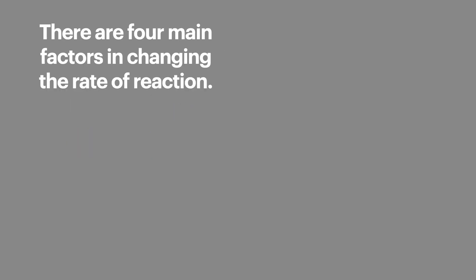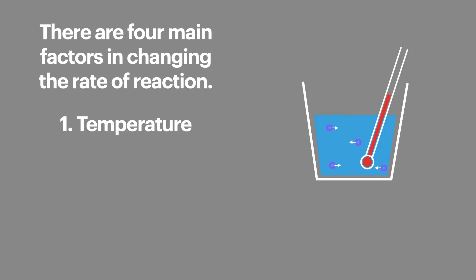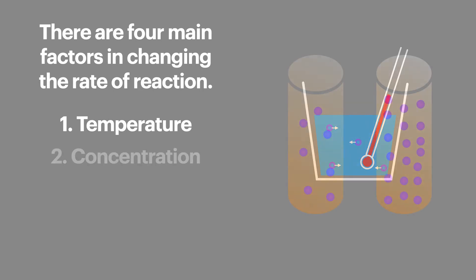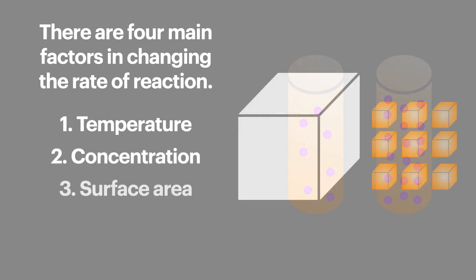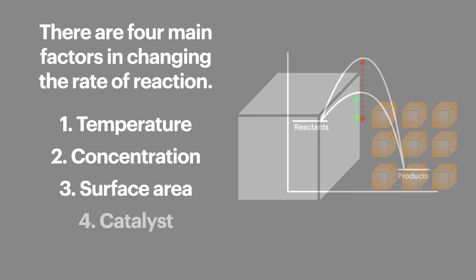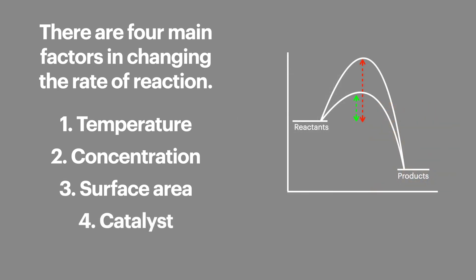There are four main factors that affect the rate of reaction. The first one is temperature. The next one is concentration or pressure. Then we have surface area, and finally the addition of a catalyst.